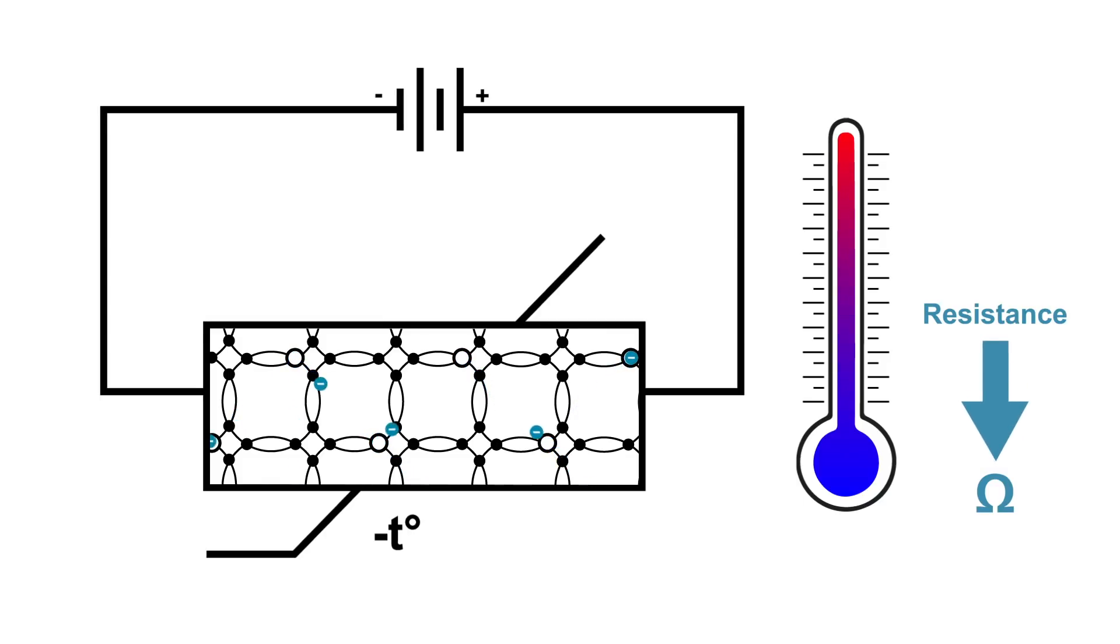When an NTC thermistor gets warmer, the electrons become more excited moving faster. The current increases. Therefore, by Ohm's law, the resistance decreases.